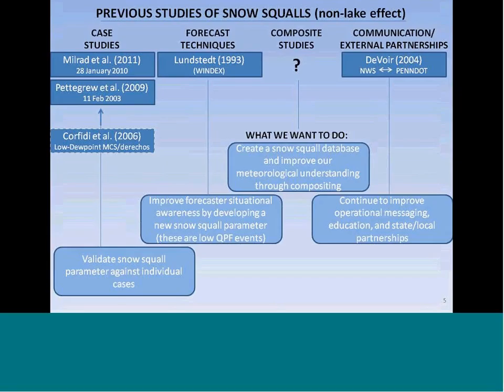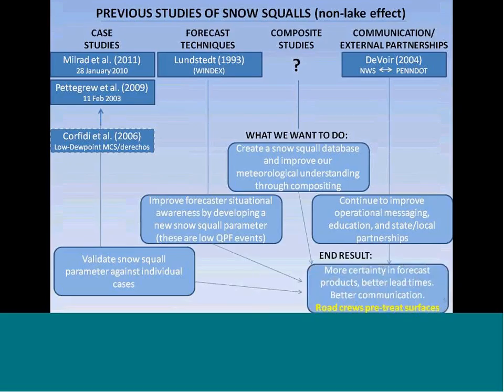We then aim to enhance forecaster situational awareness by developing a new snow squall parameter, while keeping in mind that these are generally low QPF events that don't typically catch the eye of the forecaster. We want to continue to improve operational messaging, enhance state and local partnerships, and validate our snow squall parameter against individual cases. Our hope is that road crews would pre-treat surfaces, which has been shown to help mitigate the more significant impacts that occur on roadways.